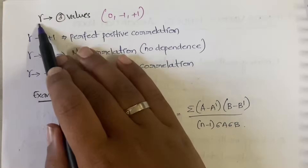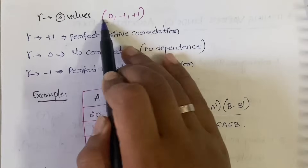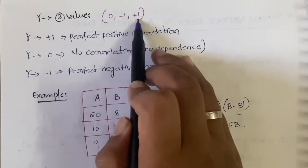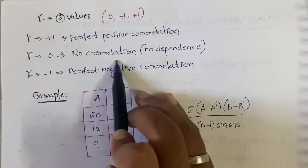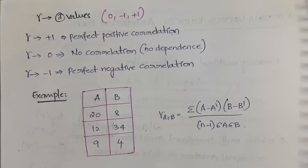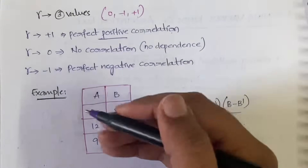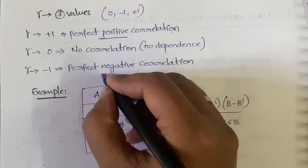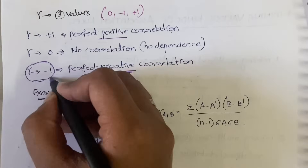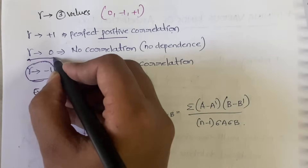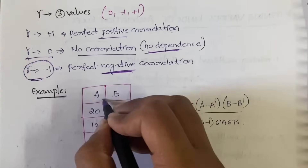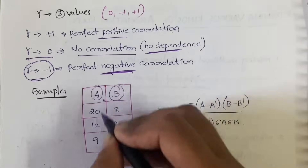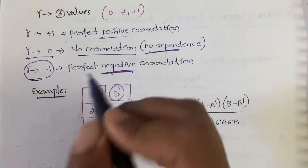The correlation coefficient can have three key values: 0, -1, and +1. If the value equals +1, it is perfect positive correlation. If the value is 0, there is no correlation — no dependence between the two variables. If one variable increases and the other decreases (inverse proportion), the value is -1, which is negative correlation.